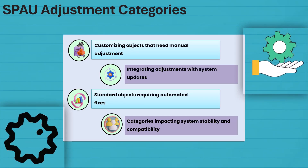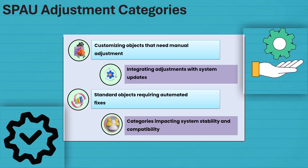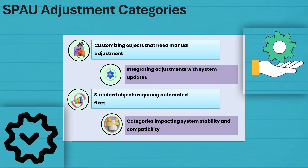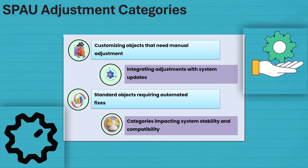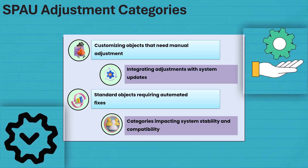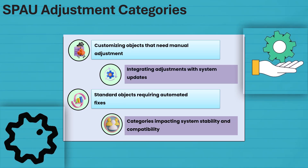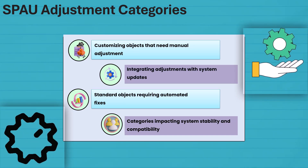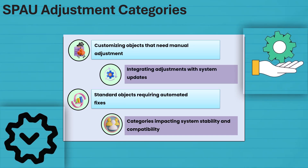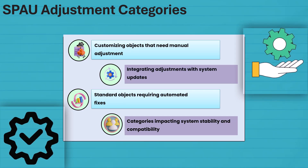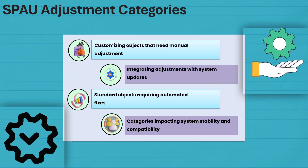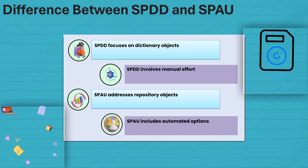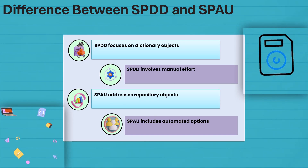SPOW adjustments are like organizing your closet — some parts need manual tweaking, others fit automatically. In this slide, we'll explore the main categories that influence system updates. Pay attention to how these adjustments keep your system compatible and stable.